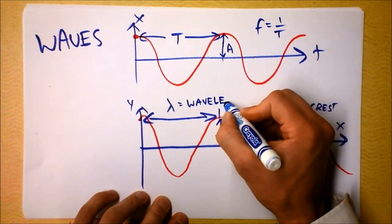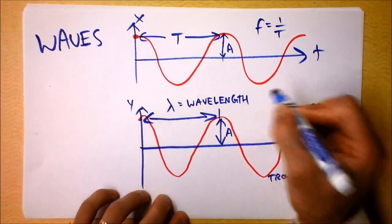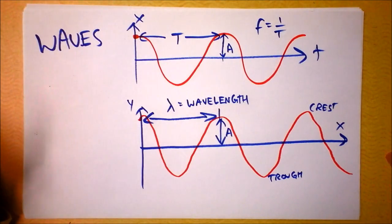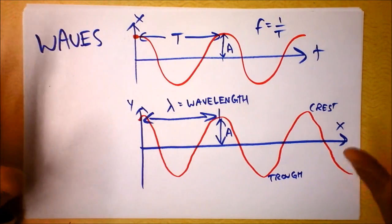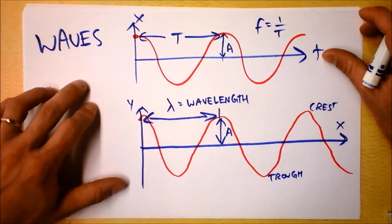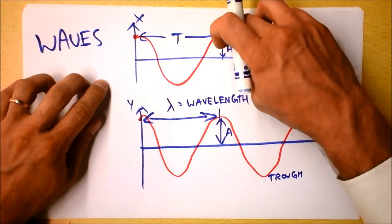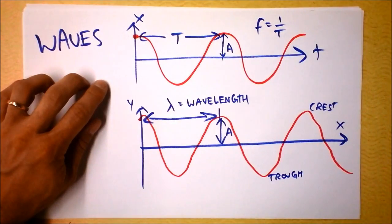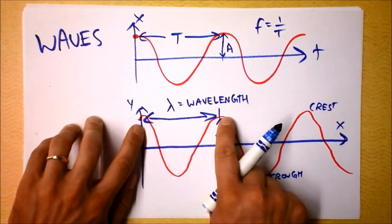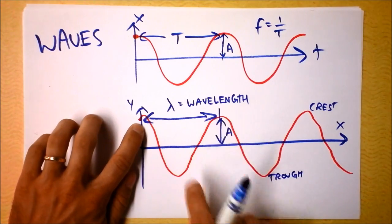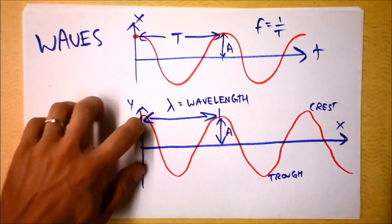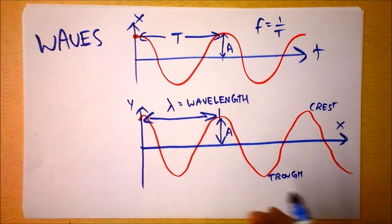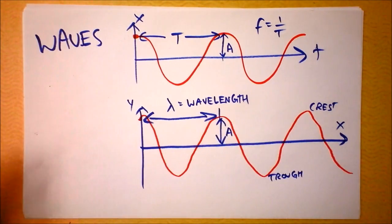Wavelength is lambda. Look how similar these two graphs are — in fact they're absolutely identical. Notice that one axis is time, so measuring horizontally gives us the characteristic time for the system: the period. On the other graph we get a distance, the characteristic distance of the wave we've created: the wavelength.